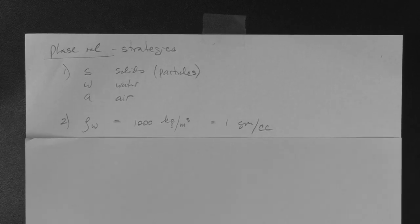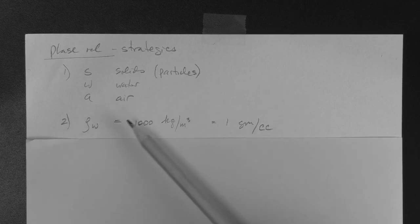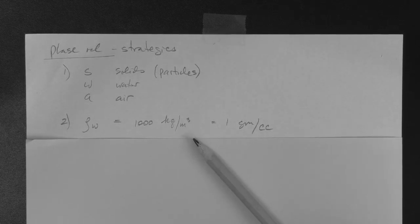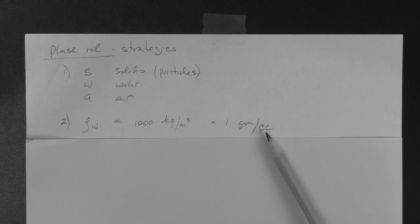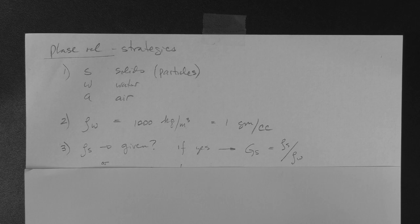Number two, always remember that the mass density of water is a thousand kilograms per meter cubed or one gram per cc, a cc is a centimeter cubed. So this is information that you should have. You should know it before you even start the problem.